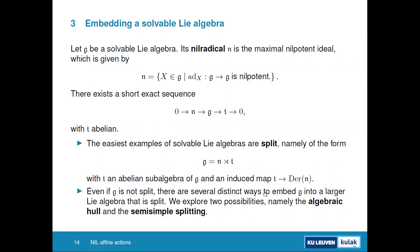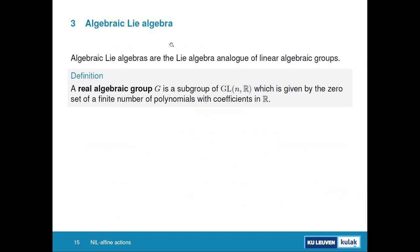We will show two ways of enlarging Lie algebra G to make it split: the algebraic hull, and the semi-simple splitting. Let me first describe what an algebraic Lie algebra is. Algebraic Lie algebras are Lie algebras corresponding to linear algebraic groups — subgroups of GL(N,ℝ) defined as zero sets of finitely many polynomials.